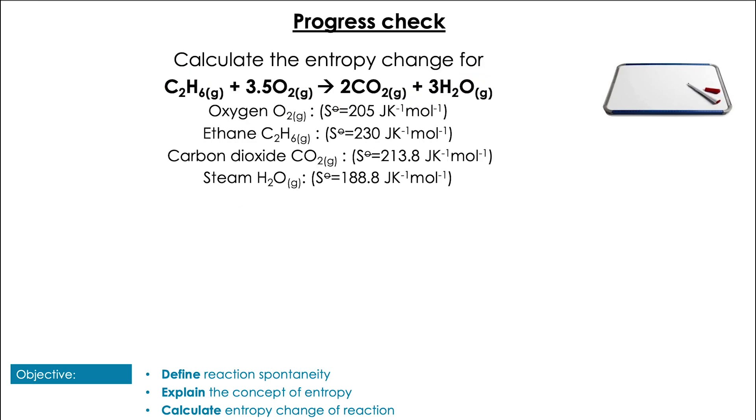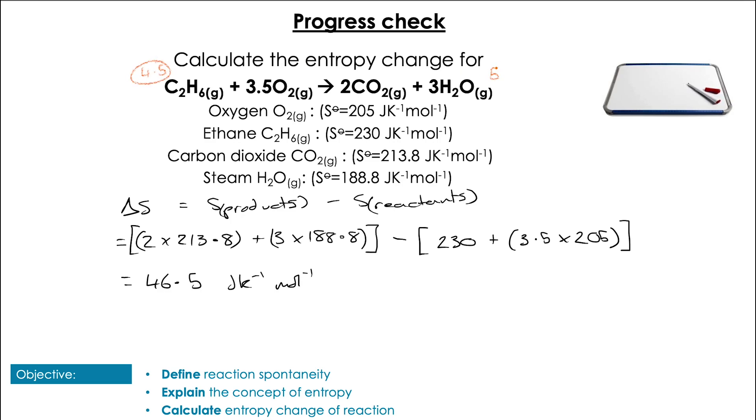Okay so have a go at calculating the entropy change for this combustion reaction then. Pause the video and have a go. Pop them up. So again we're going to do the same calculation as we did last time. That's the entropy of the products minus the entropy of the reactants. A little bit more difficult because we have to take the number of moles into account but still not too bad. We've got the products we're going to do 2 times 213.8 plus 3 times 188.8 which is our products minus 230 plus 3.5 multiplied by 205. Adding that all together we get 46.5 joules per kelvin per mole. Now we might have guessed a slight positive value as we only have 4.5 moles on the left and 5 moles on the right even if they are all gases.